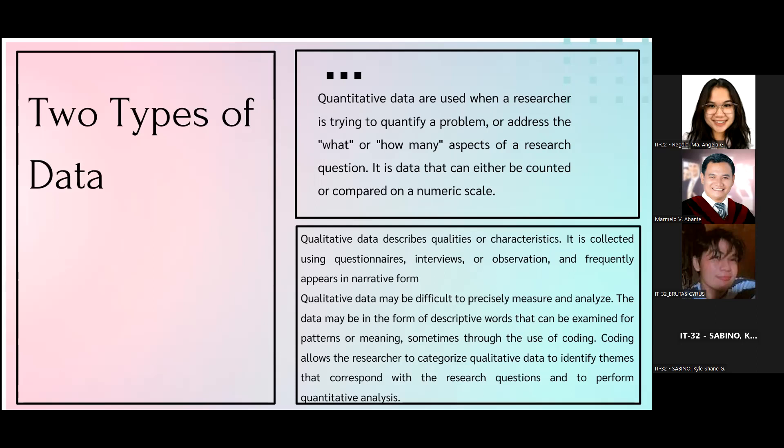Qualitative data may be difficult to precisely measure and analyze. The data may be in a form of descriptive words that can be examined for patterns or meaning, sometimes through the use of coding. Coding allows the researcher to categorize qualitative data to identify themes that correspond with the research questions and to perform qualitative analysis.